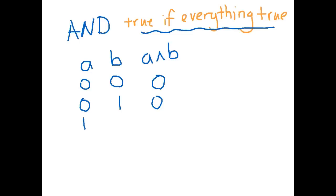Let's go with a is true and b is false. And we're ANDing them together. Is everything true? No, it's not.